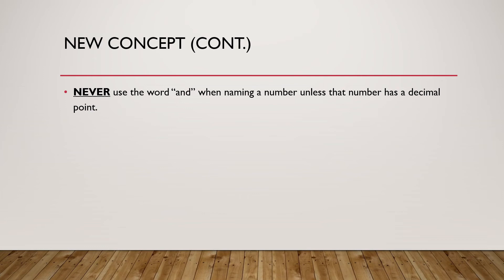This is a common mistake. Never use the word 'and' when naming a number unless that number has a decimal point. Because in math, if you say the word 'and,' that means you're putting a decimal point right where you are saying the word 'and.'